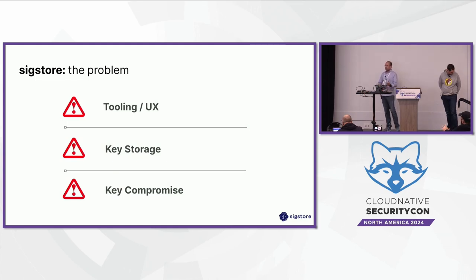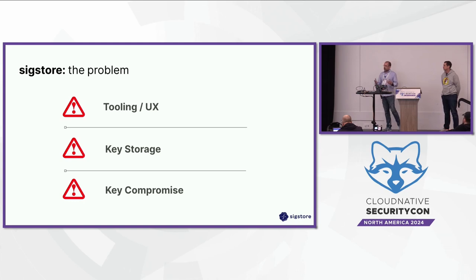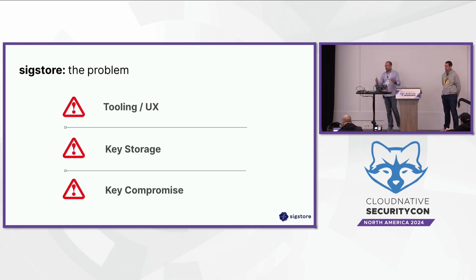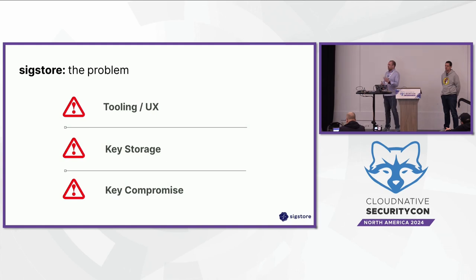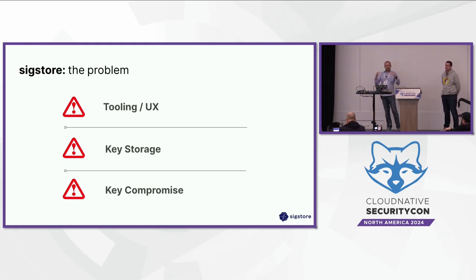Key storage was a big issue. Where do you store your public keys? How do you map them to an identity? How do you safely store your private keys? When should you rotate them? These are all challenges for developers. Key compromise is an aspect of private key storage — if you've got a long-term key, what do you do if your laptop's stolen? There were barriers making it difficult to get traction around cryptographic signatures and verification and the benefits that come from that foundation.